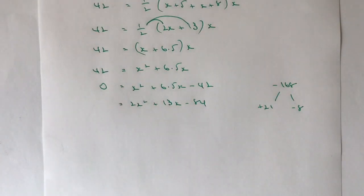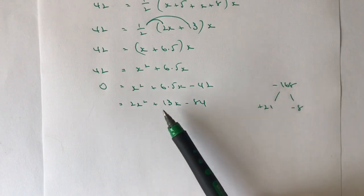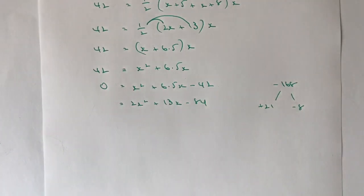That 21 and 8 multiply together make 168. And the difference between plus 21 and minus 8, which is going to give me my minus, is going to be plus 13.